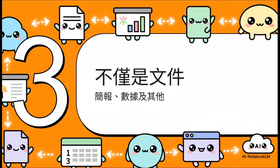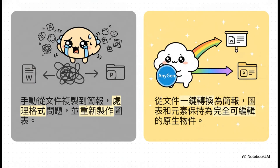当你把想法整理成一份有结构的文件之后，Anygen的魔法才正要开始。它真正厉害的地方，是能把内容无缝转换成更专业的东西，像是简报或数据报告。以前我们得把Word内容一段一段复制贴到PowerPoint，花整个下午调格式、调字体、调颜色，图表更惨，全部要重做一遍，超痛苦。